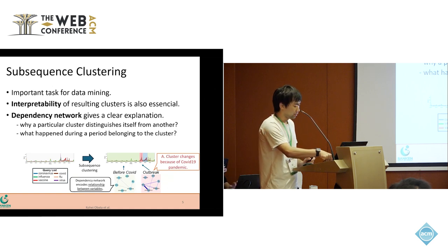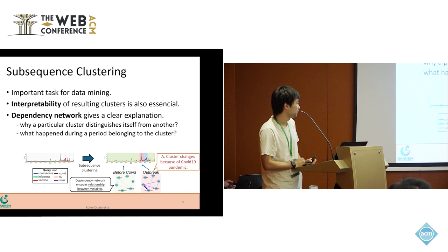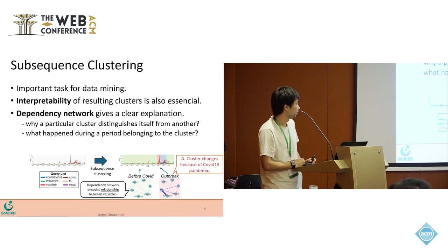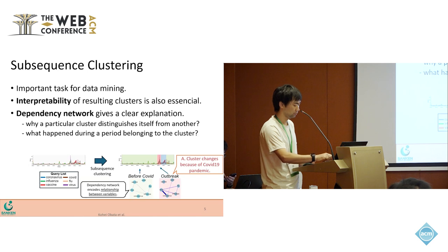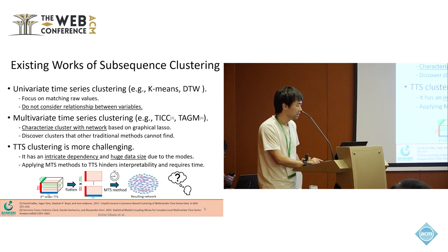Dependency network encodes the relationship between variables, and by comparing the network we can tell the differences between the green and pink clusters. And by visualizing the network, we can speculate what happened in 2020 when the cluster changed.